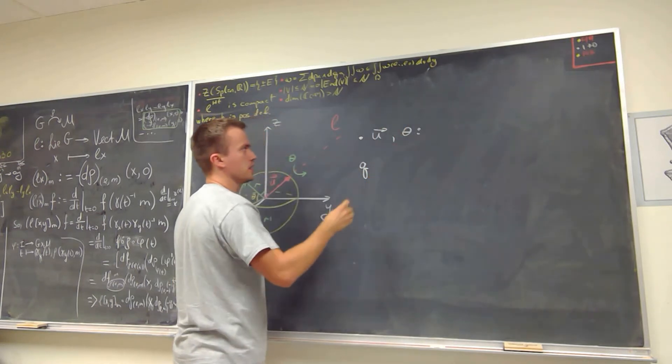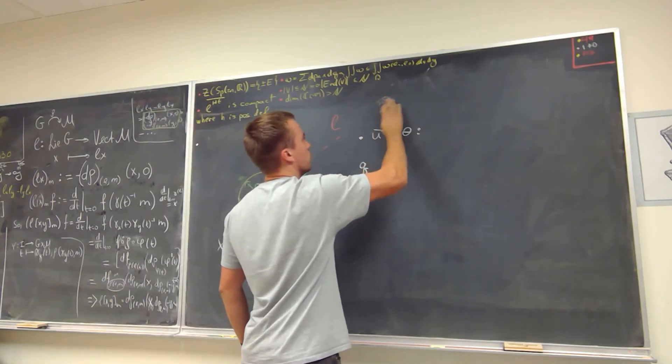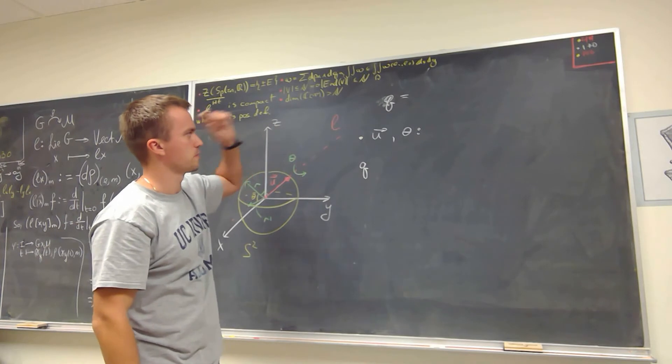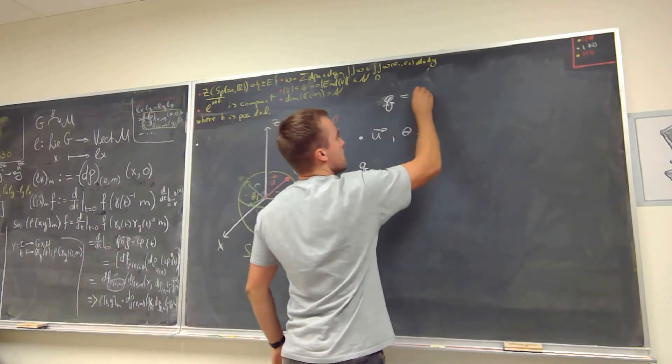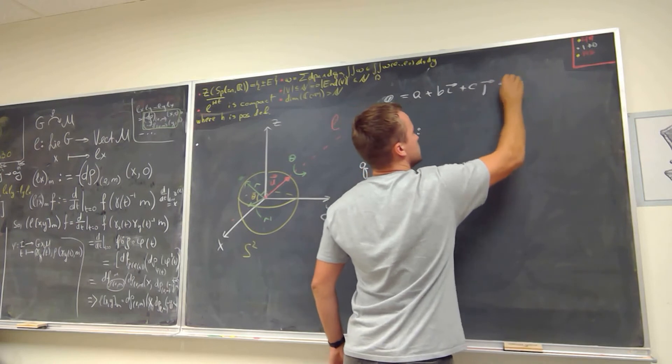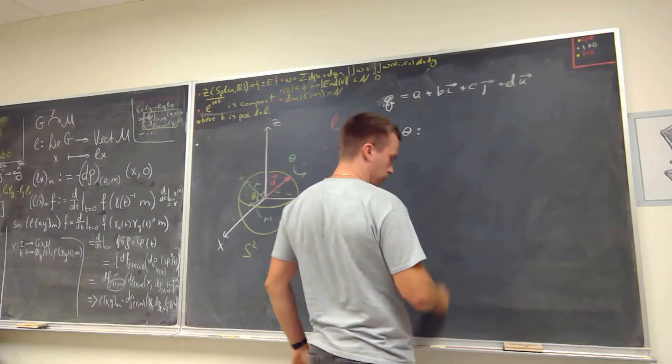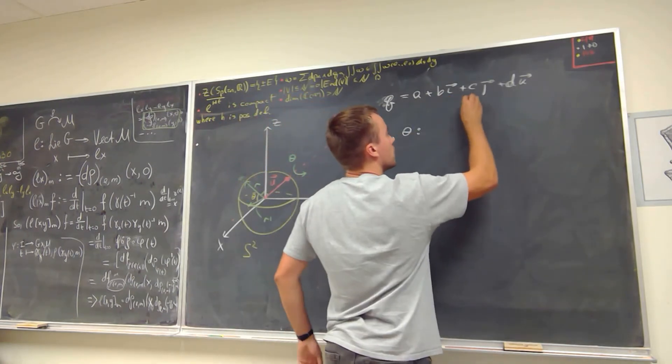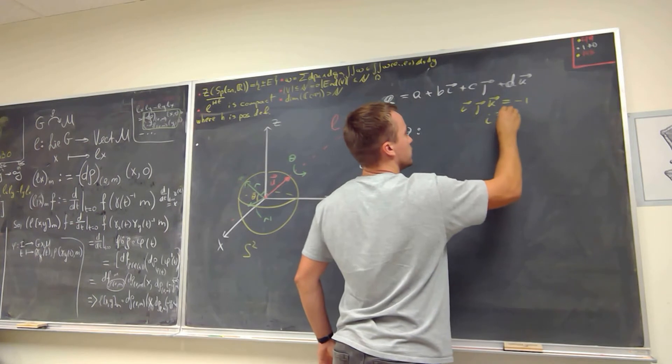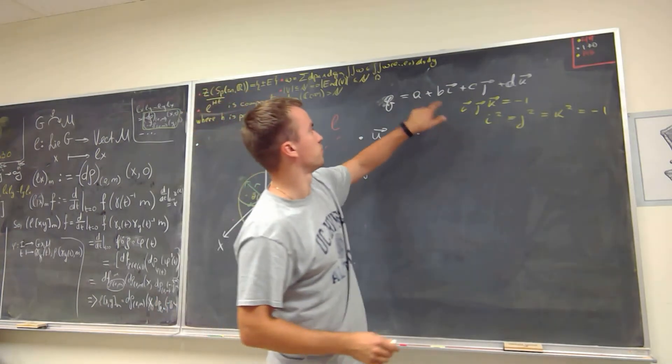So if I'm going to rotate around vector u by angle theta, then remember the quaternion of the general form, let's call it q. It's going to be equal to a plus b times i, c times j, and plus d times k. Where i, j, and k are going to have the following property: that i times j times k are going to be equal to negative one, and i squared equals j squared equals k squared equals negative one. So we have these relations for the quaternion.